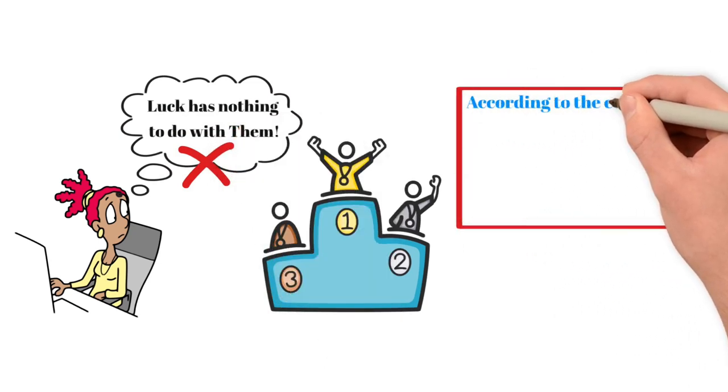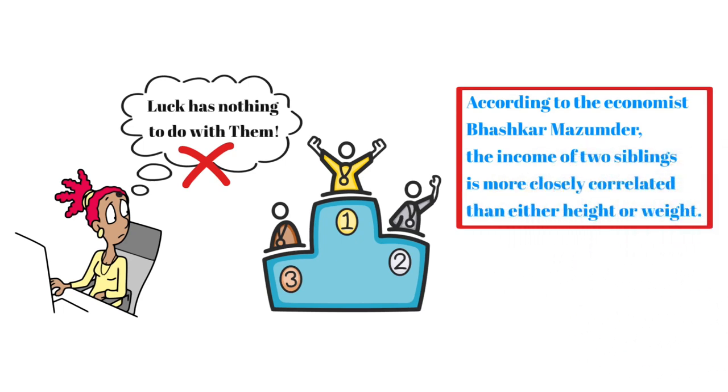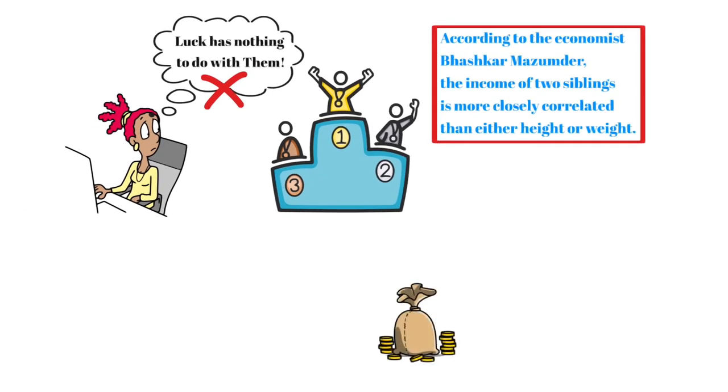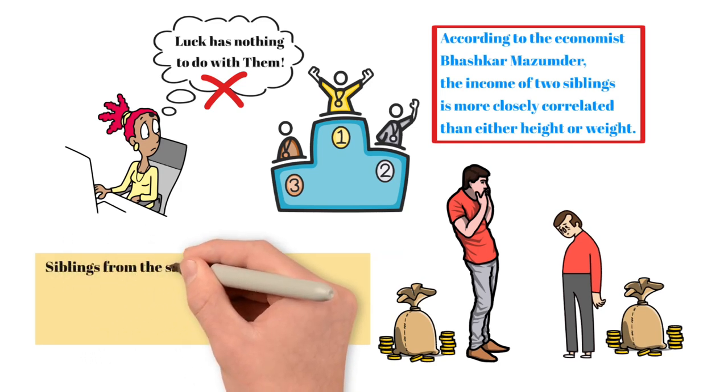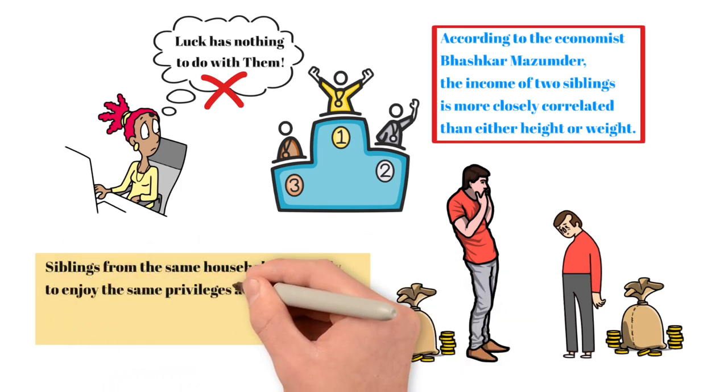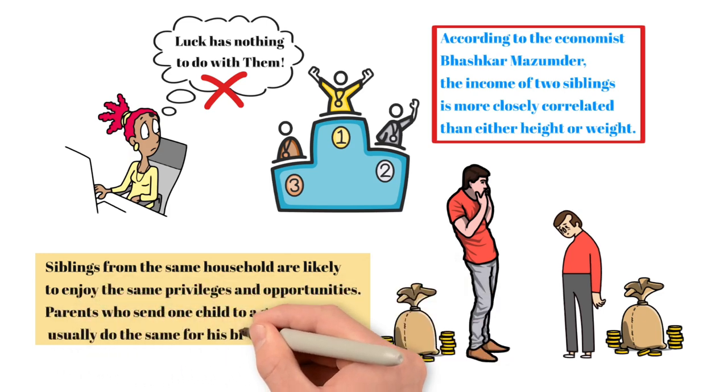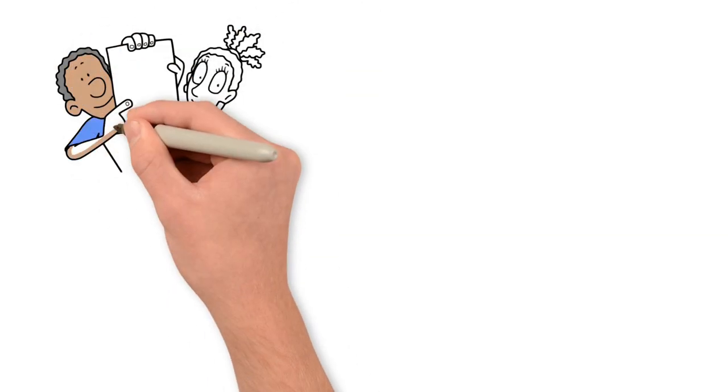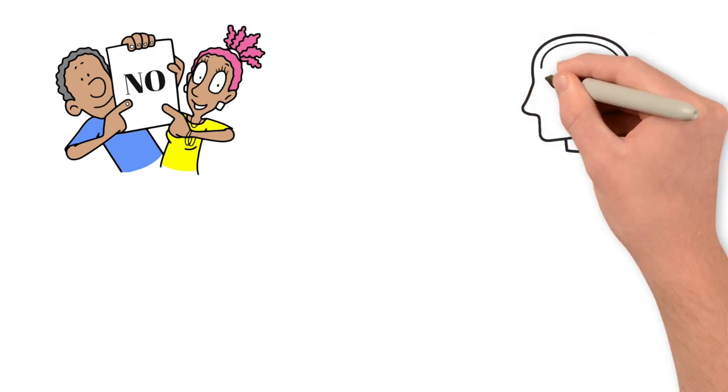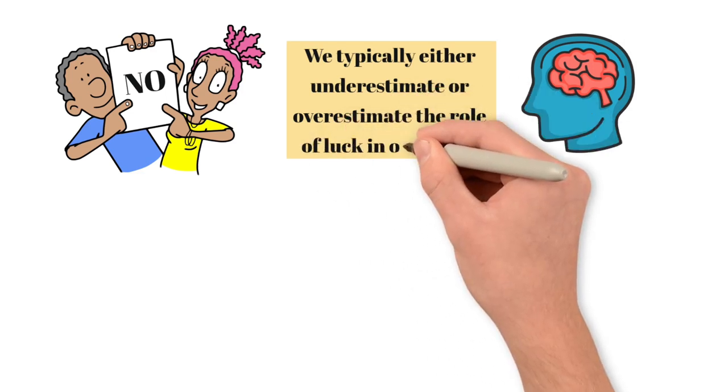According to economist Bhashkar Mazumder, the income of two siblings is more closely correlated than either height or weight. Put differently, if your brother is rich and tall, you're more likely to be rich than you are to be tall. It's easy enough to explain this correlation. Siblings from the same household are likely to enjoy the same privileges and opportunities. Parents who send one child to a good school usually do the same for his brother. Find a pair of rich brothers, though, and you'll find two people who don't believe that Mazumder's study applies to their family.